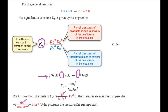Kp and Kc are related because at constant temperature the partial pressure of a gas is proportional to its concentration. This is discussed at the bottom of page 62. For a general reaction taking place in the gas phase, Kp equals Kc times RT raised to the power delta N, where R is the gas constant, T is the temperature, and delta N is the change in the number of moles of gas on going from reactants to products.